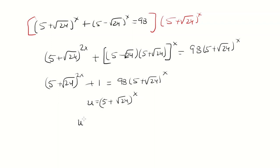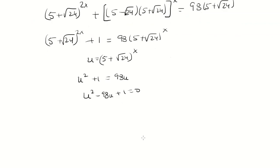So that becomes u squared plus 1 equals 98u. Bringing the 98u over, we can use the quadratic formula. So this will be 98 plus or minus the square root of 98 squared, which is 9604, minus 4, all over 2.